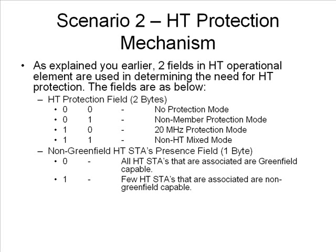Mode 2 is otherwise called 20 MHz protection mode. This mode is set if only HT stations are associated in the BSS and at least one 20 MHz HT station is associated to the BSS. Mode 3 is called non-HT mixed mode and is used if one or more non-HT stations are associated in the BSS. The other parameter, the non-green field HT stations present field, is a one-bit field with two states based on whether non-GF HT stations are present in the BSS. If non-GF HT stations are present, HT GF protection is used.